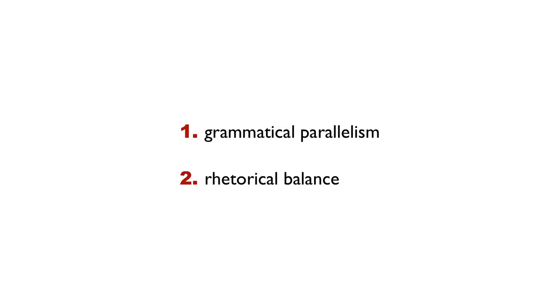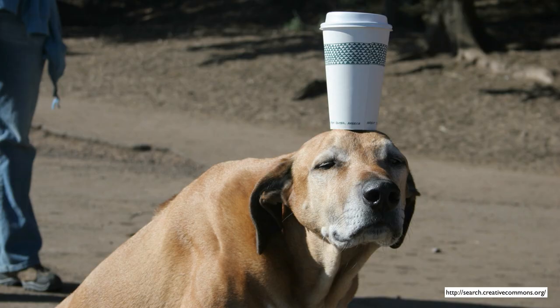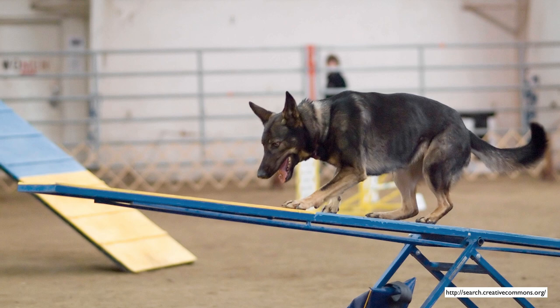Part one is going to be about grammatical parallelism. The second lesson, which will be a separate video, is going to be about rhetorical balance. These two things share in common the idea of balance — they're both teaching you a certain way to balance the parts of your sentence. Grammatical parallelism means that you match one aspect of your sentence in grammatical form with another aspect of the sentence.